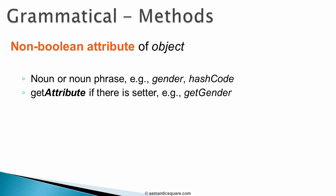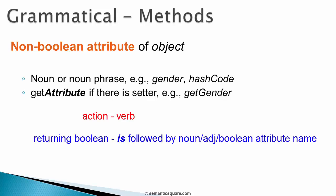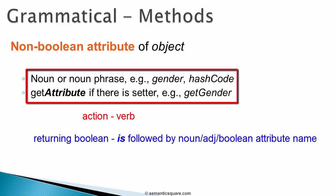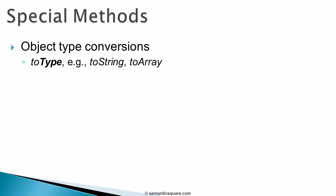To recap: if a method performs an action, use a verb; if it returns a Boolean, use 'is' followed by a noun or adjective; if it returns a non-Boolean attribute, use the attribute name directly or with a 'get' prefix. There are also methods that convert the type of an object — when invoked, they return an independent object of a different type. In this case, use 'to' followed by the destination type, like toString, which returns a string representation of the object.